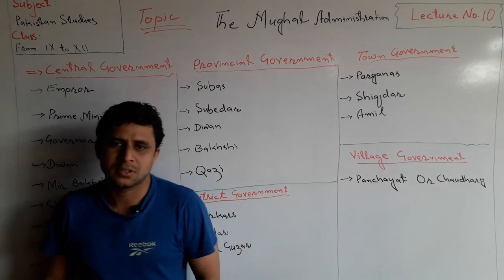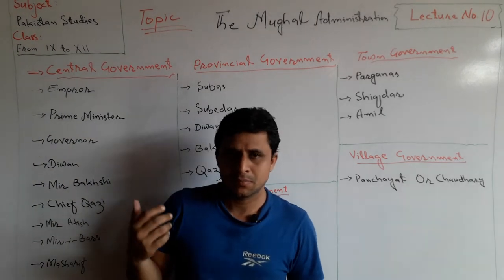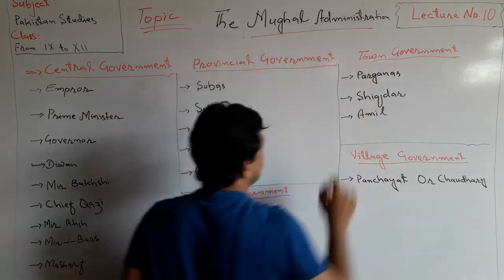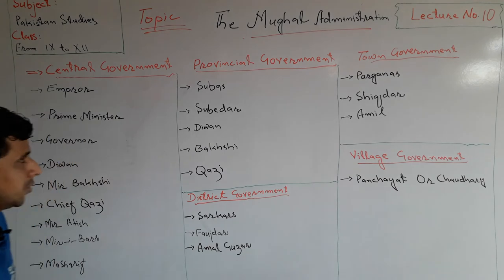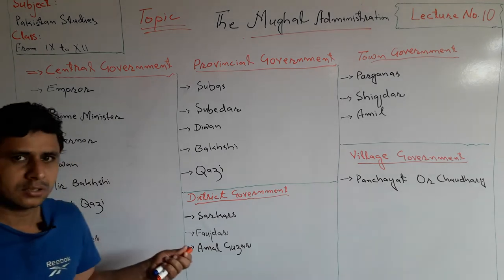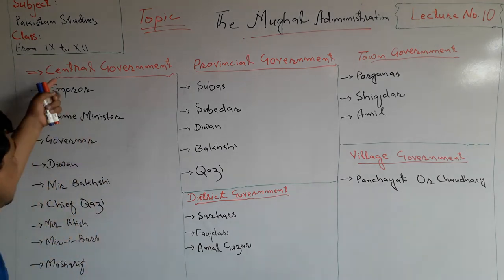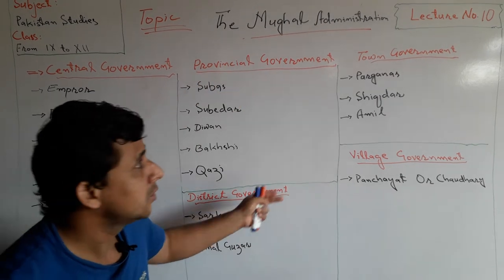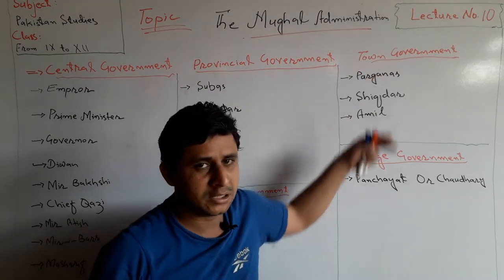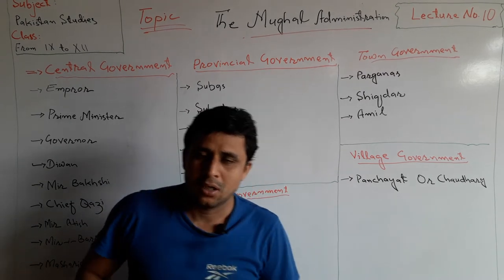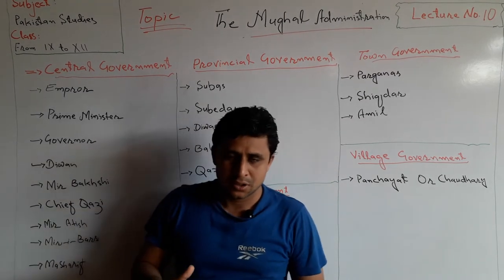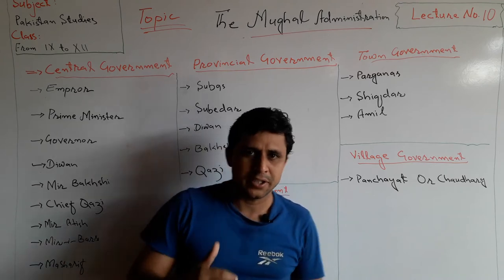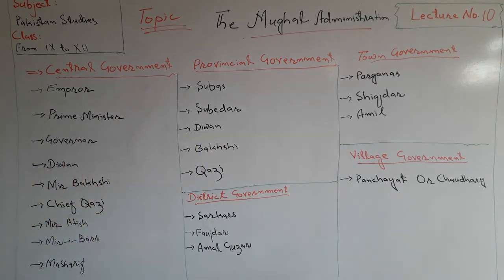Assalamu Alaikum dear friends, I am Sajid Ali. The topic under discussion is Mughal Administration. In this topic we are going to discuss central government, provincial government, district government, town government, and villages — how Mughal administration worked and how Mughal emperors ruled over India.